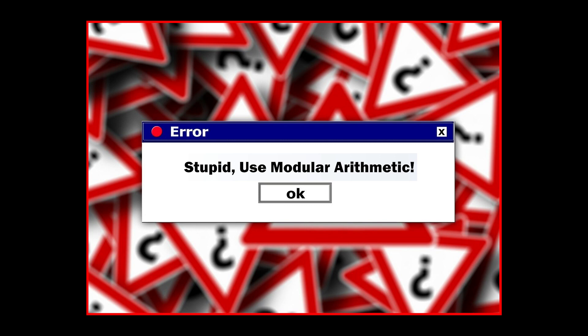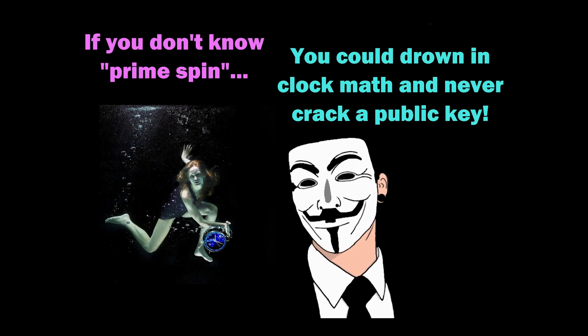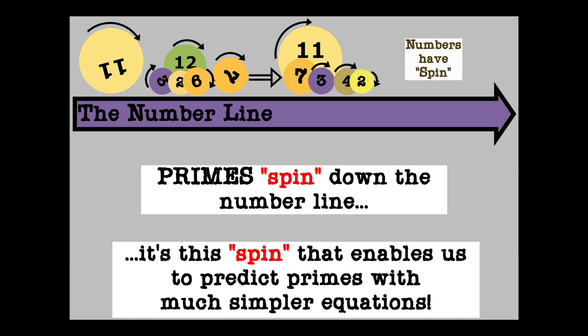Even a computer will tell you. Erdős is stupid. Use modular arithmetic. Yes, clock math, but with a twist. If you don't know prime spin, you could drown in clock math and never crack a public key. Tao doesn't know that primes spin down the number line. It's this spin that enables us to predict primes with much simpler equations.